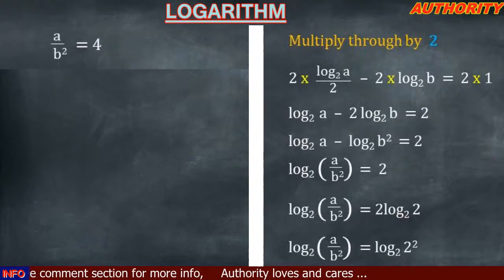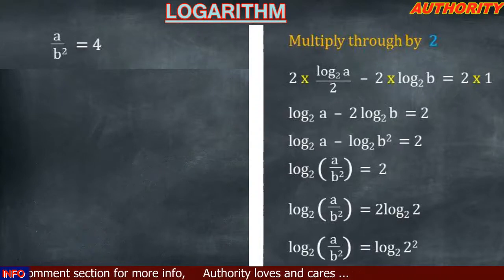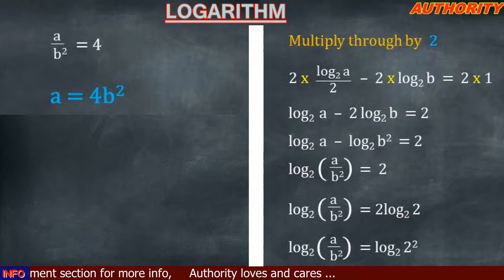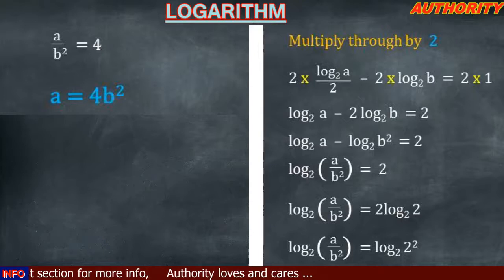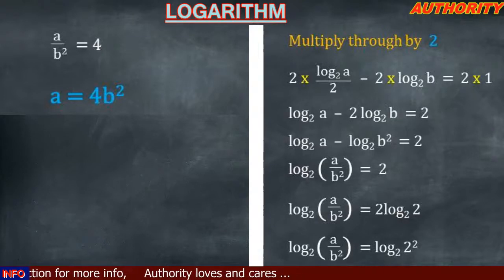Taking away the bases we have a over b² equal to 4. Cross multiplying, we get a equal to 4b². That is the value of a.